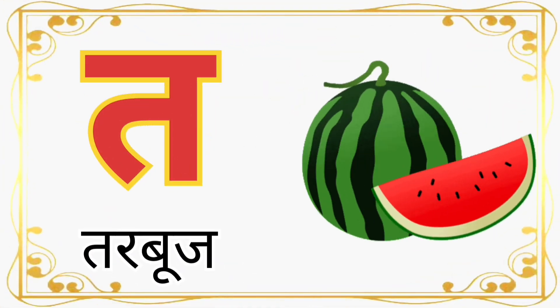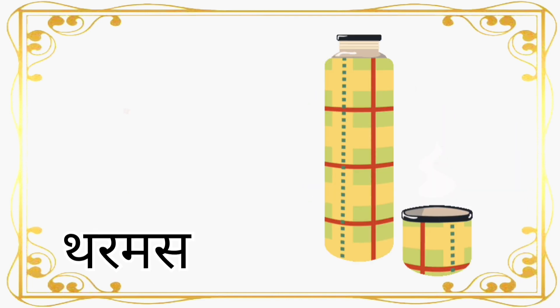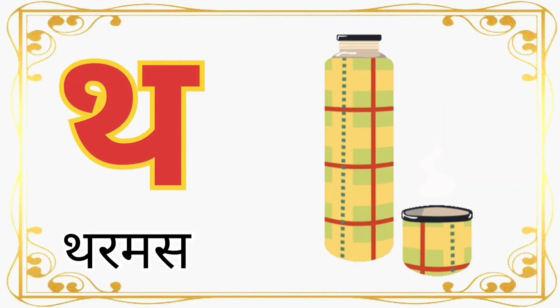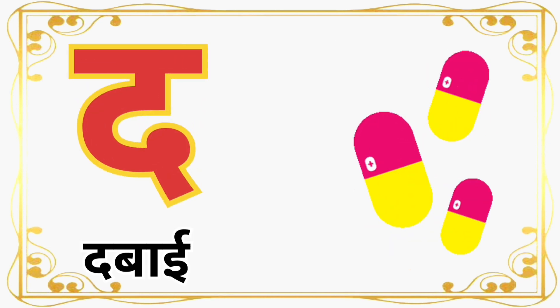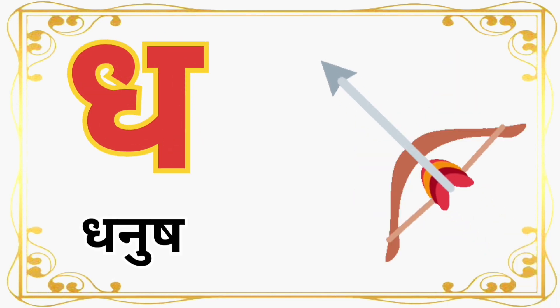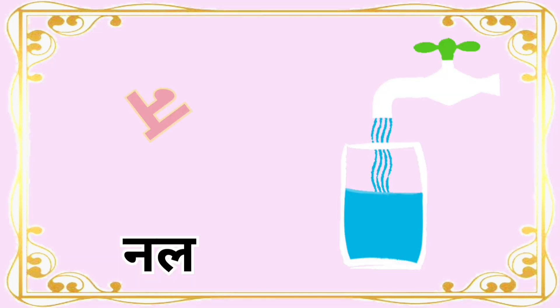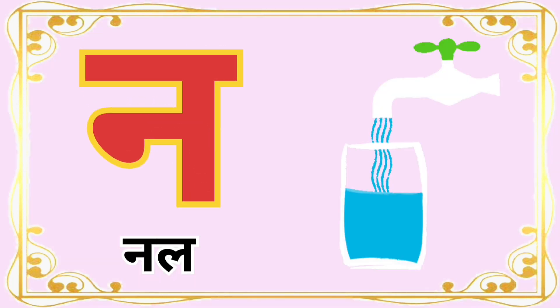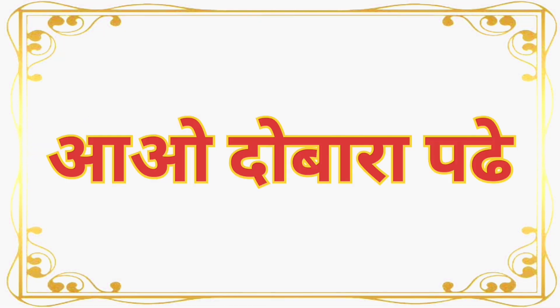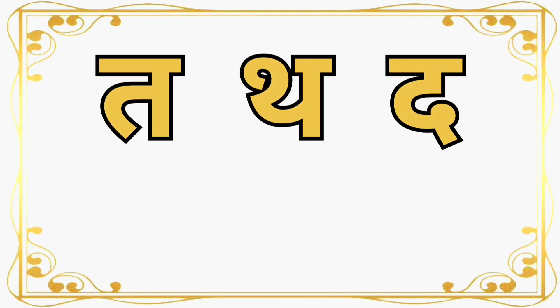त से तरबूज़ (Ta for watermelon). थ से धर्मस (Tha). द से दवाई (Da for medicine). ध से धनुष (Dha for bow). न से नल (Na for tap). आओ दुबारा पढ़ें: ता, ठा, दा, धा, न।